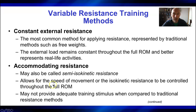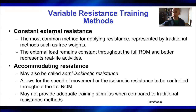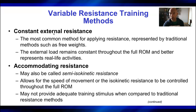There are different ways to load an exercise. A constant external resistance — like a dumbbell or barbell — means the load doesn't change through the range of motion. If you're using a 50 pound dumbbell, it weighs 50 pounds the whole way through. Most resistance training we do is constant external resistance. Another type is accommodating resistance, where the load changes through the range of motion, but this can only be done through a specialized machine and doesn't really apply much in a gym type environment.